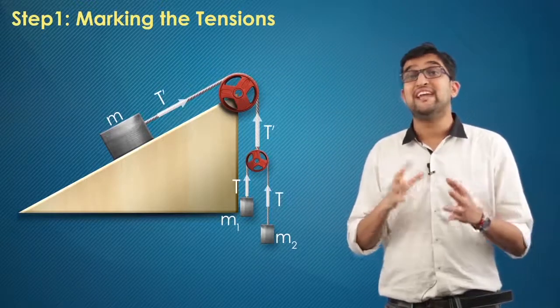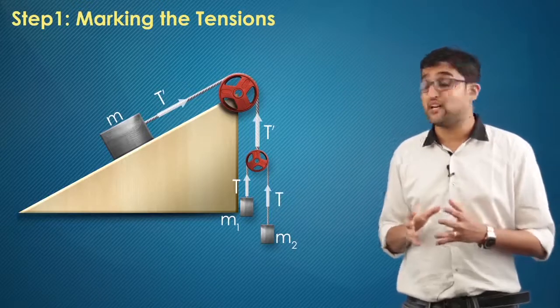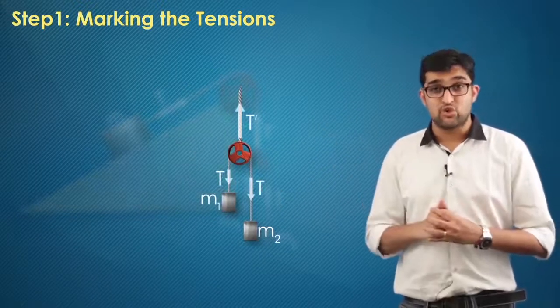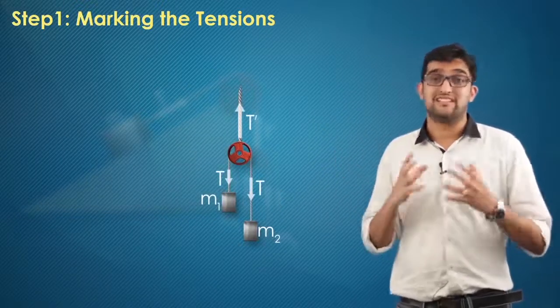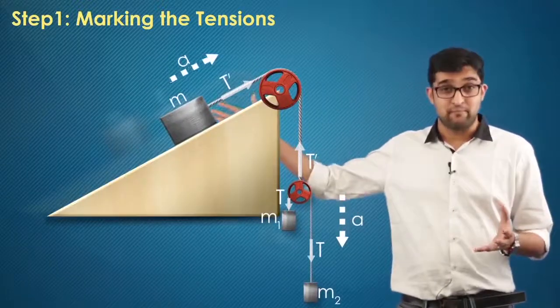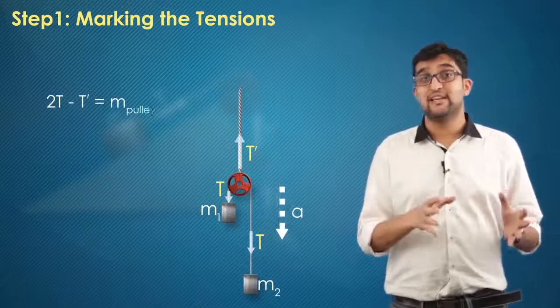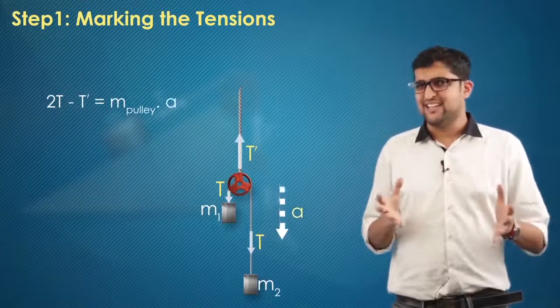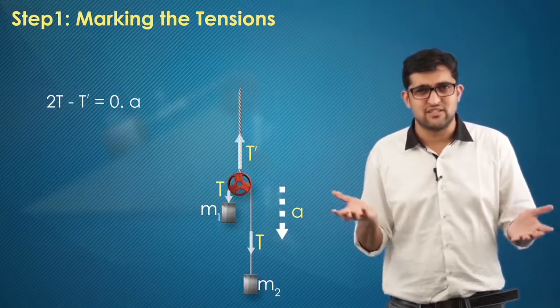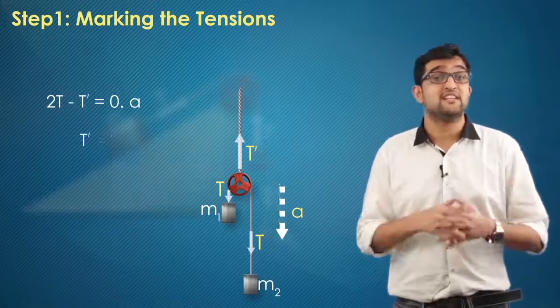For getting the relationship between T and T', I take the free body diagram of pulley 2 here. You might have guessed that pulley 2 uses the same acceleration as the body M. So I got 2T minus T' equals mass of the pulley into acceleration A. But hey, this pulley 2 is massless, so the equation becomes T' equals 2T.